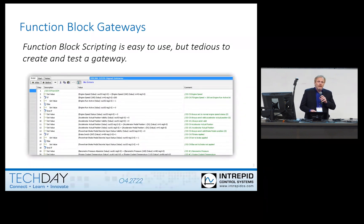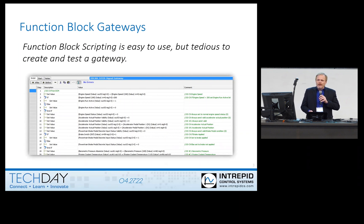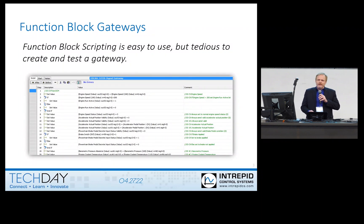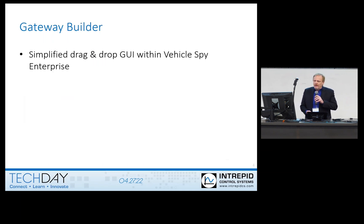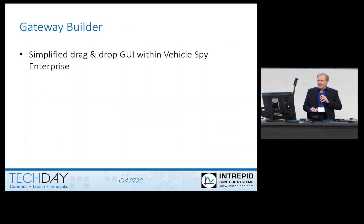If you've ever had to create your own gateway, you've probably done it either through programming or, with our products, we have a function block scripting language that you can use to set up simple state machines. It works really well, but it can be pretty tedious to develop and test if your gateway has any complexity to it. So what Gateway Builder is, is a simplified visual gateway tool within Vehicle Spy Enterprise.